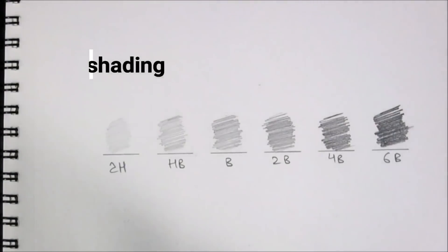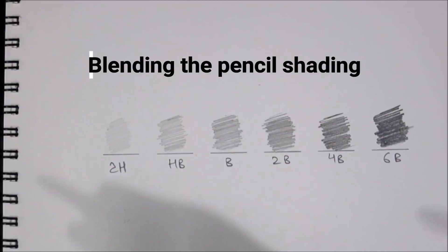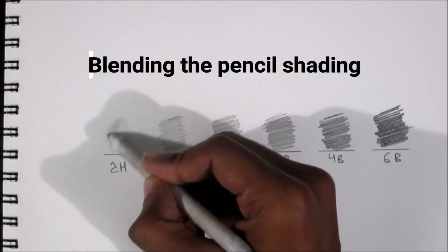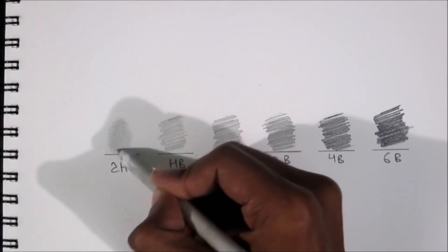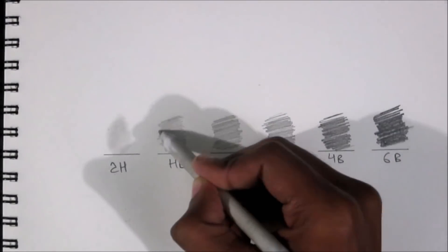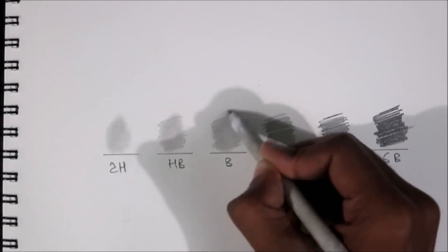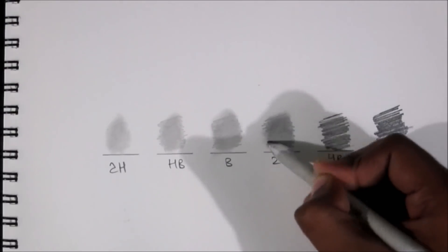Now I will show you blending with this shading. I will use a blending stump. If you don't have a blending stump, you can use tissue paper or cotton bud. The blending stump link is in the description. You can see it gives smooth finishing to pencil shading.